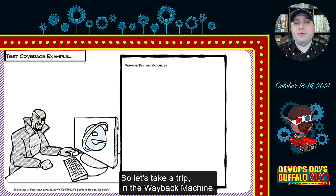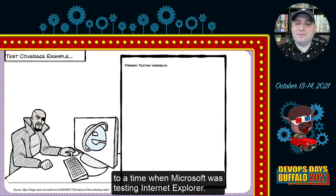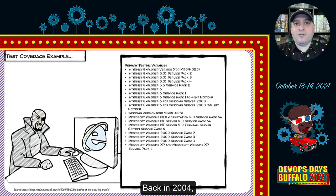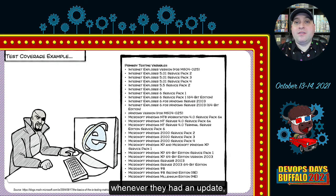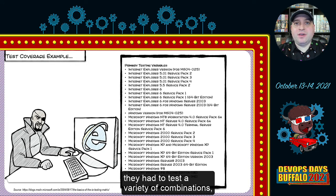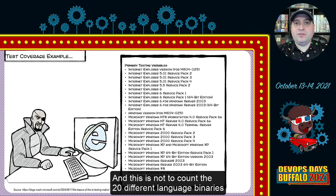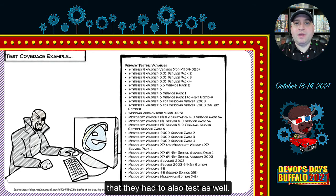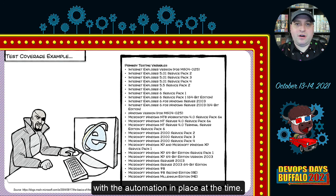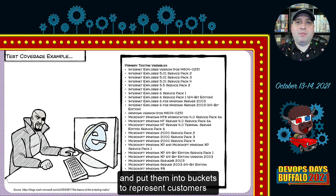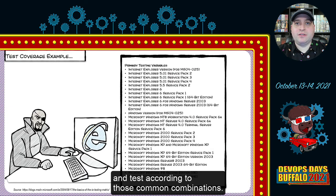Let's take a trip in the Wayback Machine to a time when Microsoft was testing Internet Explorer — hard to believe, but yes, they did test Internet Explorer. Back in 2004, whenever they had an update, they had to test a variety of combinations across different servers, versions of Internet Explorer, and versions of Windows — not counting the 20 different language binaries they also had to test. Even a company as large as Microsoft had great challenges testing these combinations with the automation in place at the time.